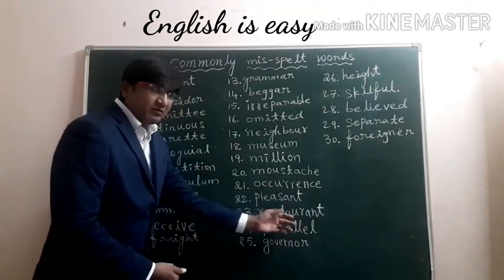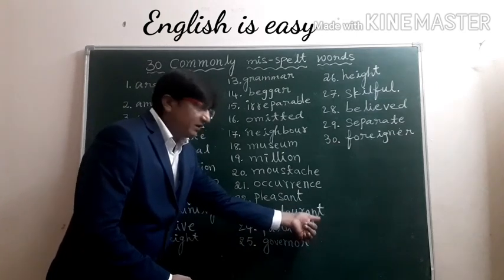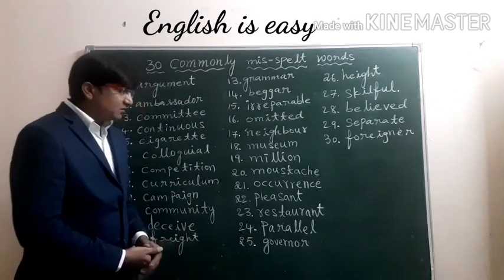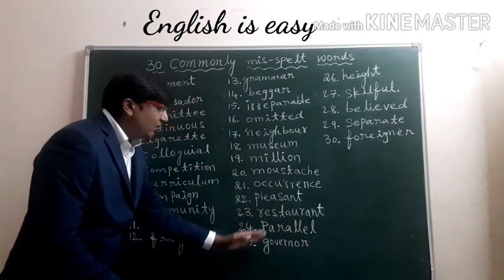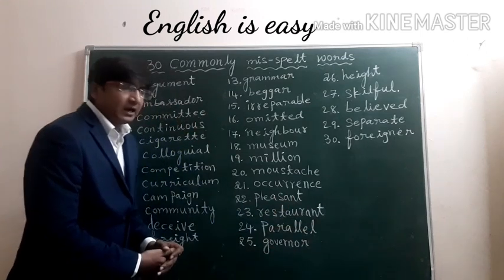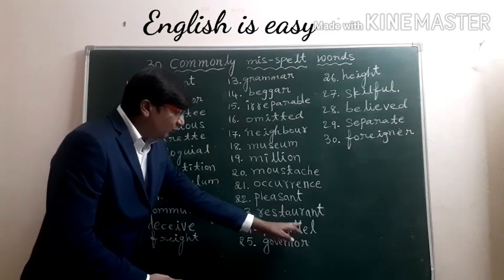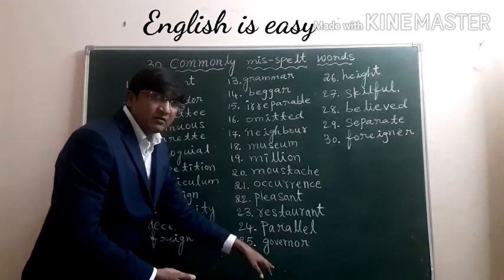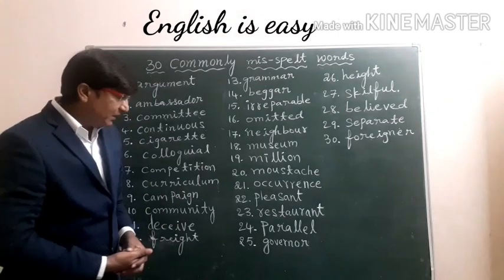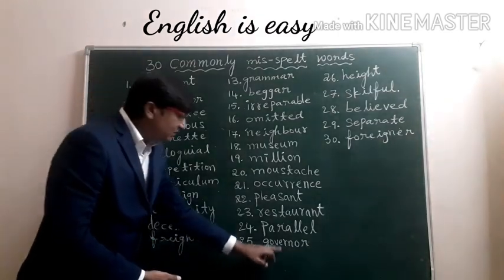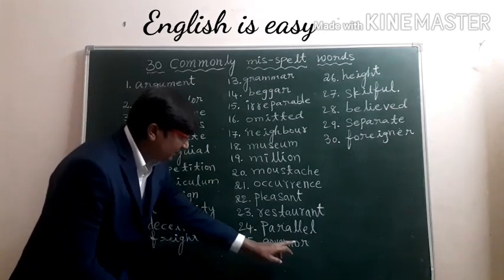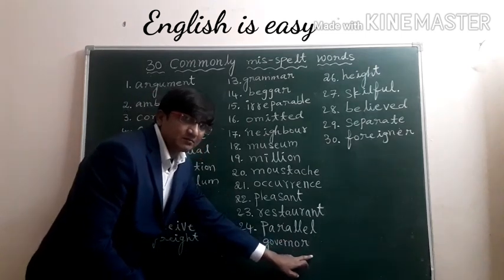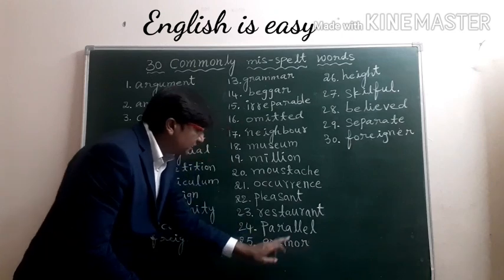Twenty-third: Restaurant. Even when we write this word, we will write E-N-T at the end. But remember, it's not E-N-T, it's A-N-T — R-E-S-T-A-U-R-A-N-T. Twenty-fourth: Parallel — P-A-R-A-L-L-E-L. Sometimes we miss one L. That's wrong — in parallel, the letter L will always be double. Twenty-fifth: Governor. Children write E-G-O-V-R-N-E-R. That's wrong — it's not V-R, it's O-R — G-O-V-E-R-N-O-R.